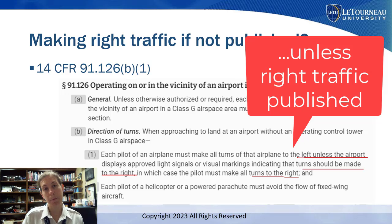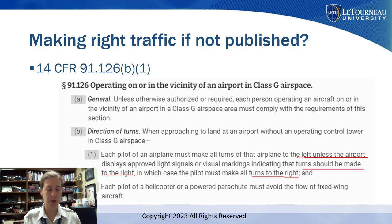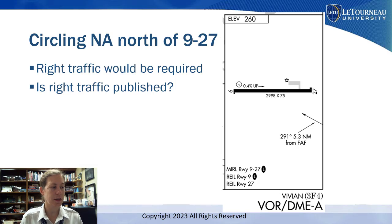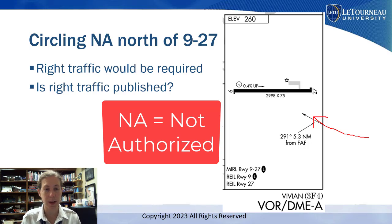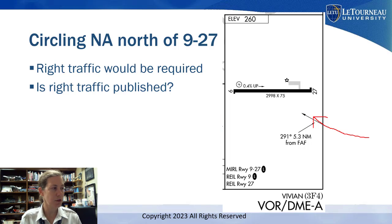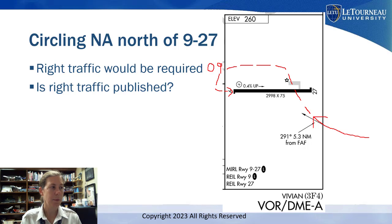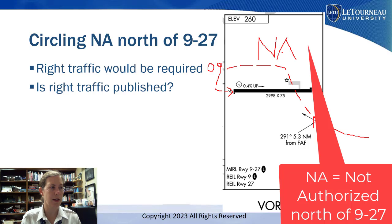Here's the problem with just saying: I'm going to circle to land on the other side of the airport. Going back to the Vivian example: the chart says very clearly, circling not authorized north of runway 927. So if I'm approaching from the south and want to circle to land on runway 9, in order to make left traffic I would have to fly over the airport — but that puts me in the area where circling is not authorized. That's a problem, unless right traffic is published.